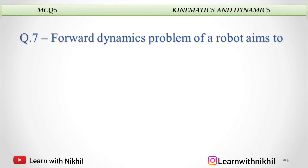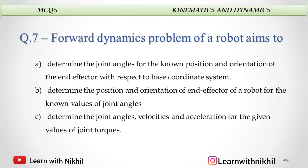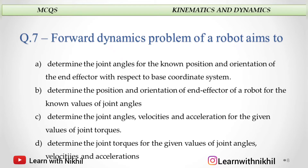Forward dynamics problem of a robot aims to do what? The previous question was forward kinematics; this is forward dynamics. The answer is: determine the joint angles, velocities, and acceleration for given values of joint torques. For forward kinematics, we have position and orientation. For forward dynamics, we have joint angles, velocities, and acceleration.